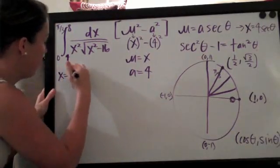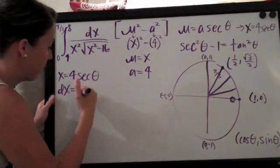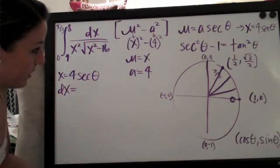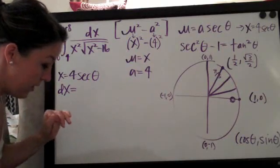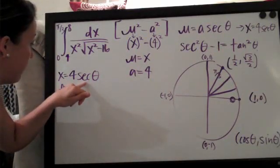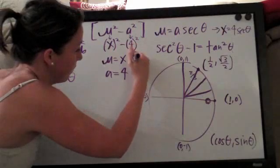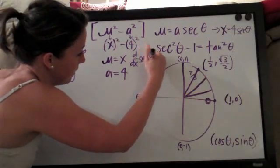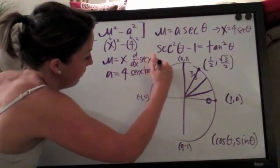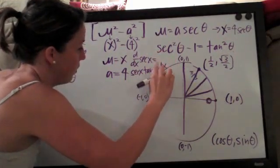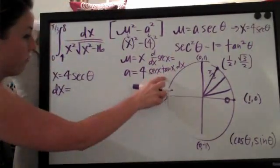So if x equals four secant theta, then dx is actually going to be, and we need a formula for this. I think I need to leave my unit circle up so we'll leave it up for now. But the formula for this, the derivative of secant of x, and that's what we're doing here, we're finding the derivative to get dx. The derivative of secant x is actually secant x times tangent of x dx. So that might not be a formula that you are familiar with but this is the formula that we'll need to use.